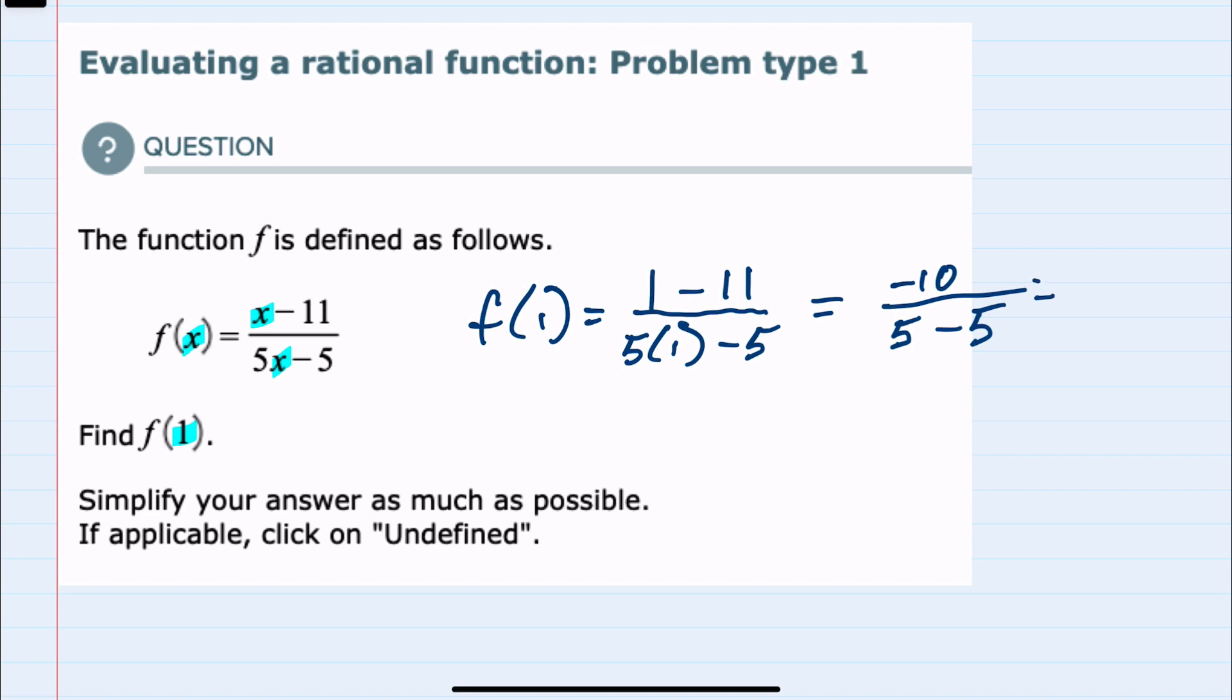And this presents a problem because it simplifies to negative 10 over 0. And since this has division by 0, we were told that undefined is going to be a possibility. And in this case, it is our solution because we ended up with a fraction with 0 in the denominator.